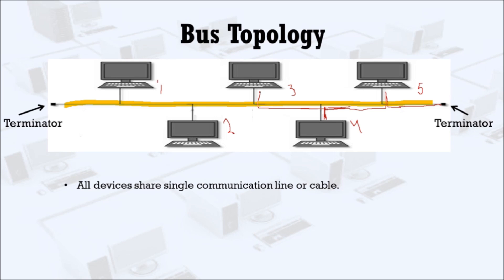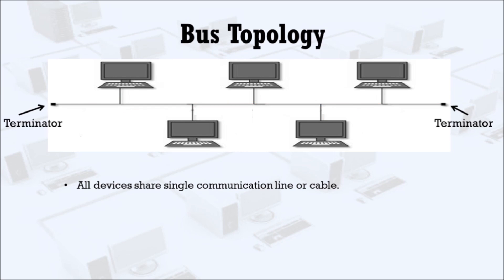In the other direction, the data moves to node 3 and checks whether it is the receiver. If no, it ignores and moves to node 2, checks again — if no, it ignores and moves on to node 1. Here it checks the address again, and now it is the receiver, so it receives the data. This is how bus topology works.